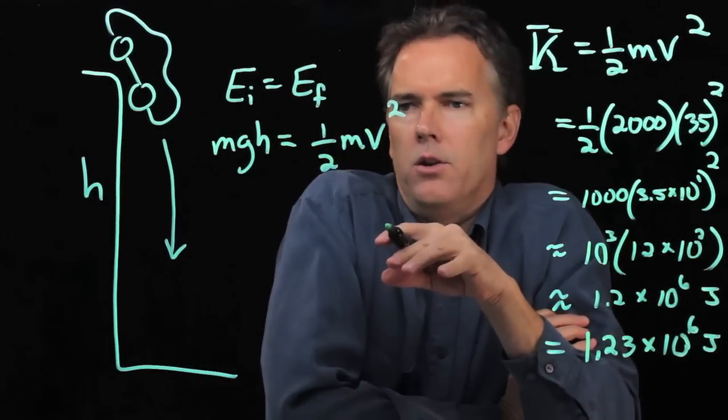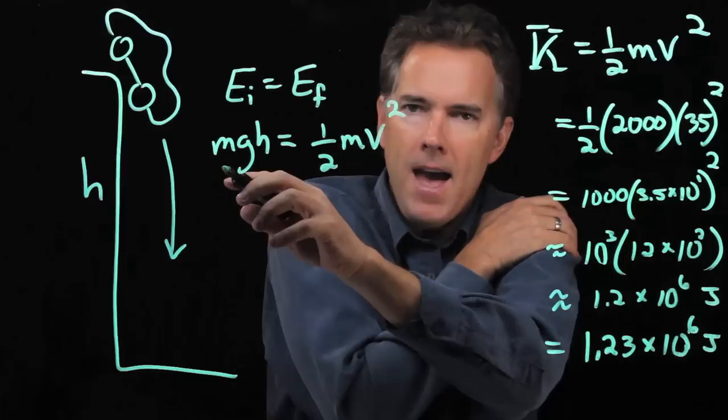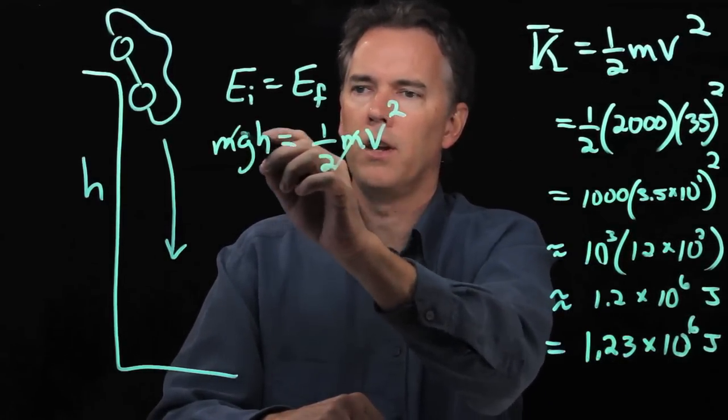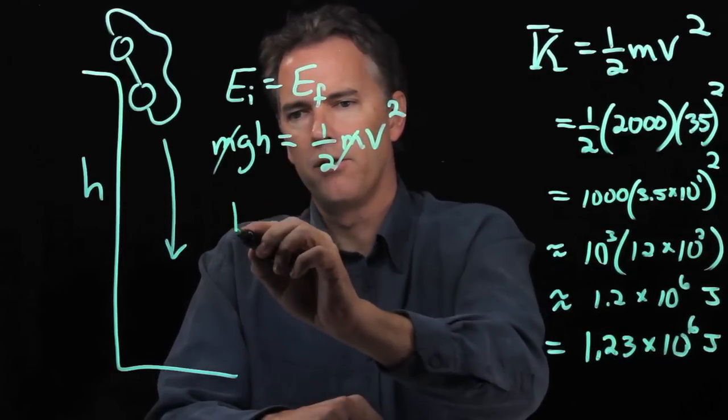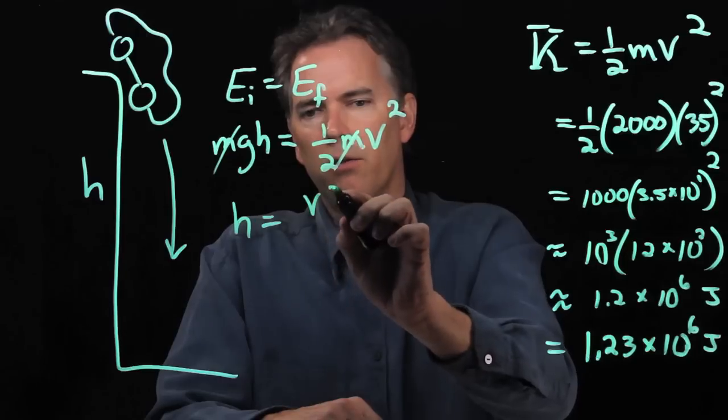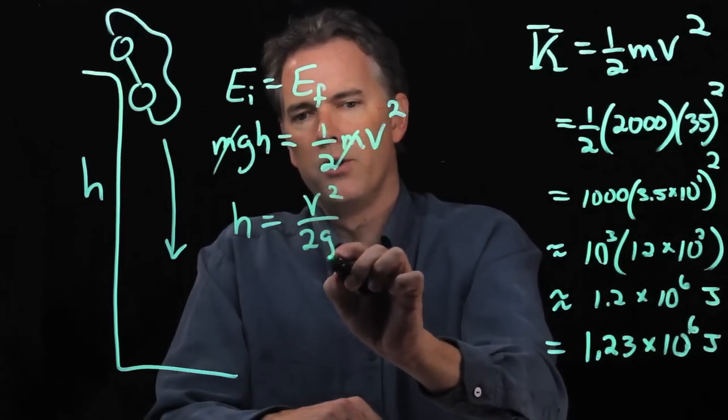And now here's something really interesting that happens. I have m on the left side, I have m on the right side. Those cancel out. And so I can solve this for h. I get h is equal to v squared over 2g.